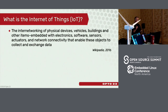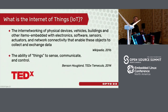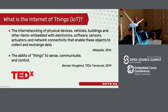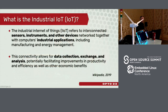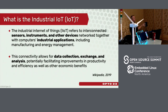Let's go into IoT. I did a TEDx talk on IoT back in 2014 and distilled it down to: it's the ability of things to sense, communicate, and control. When we start talking about IIoT, things are a little bit different. It's very similar to IoT, but now we're talking about sensors, instruments, and devices connected to industrial applications — to collect, exchange, and analyze data to better business processes and potentially come up with new business ideas.